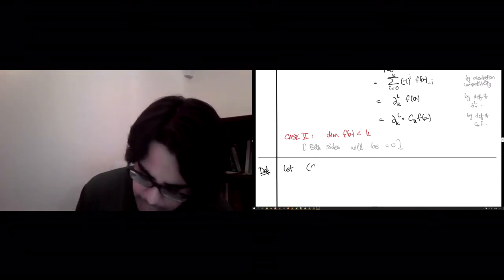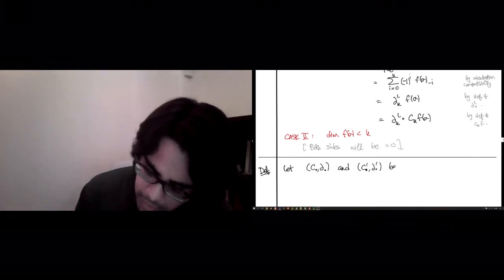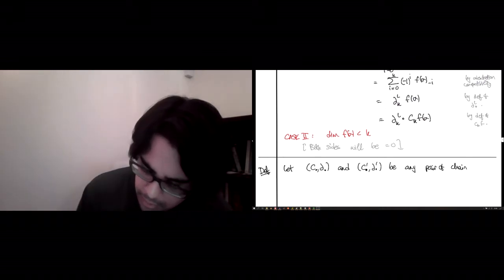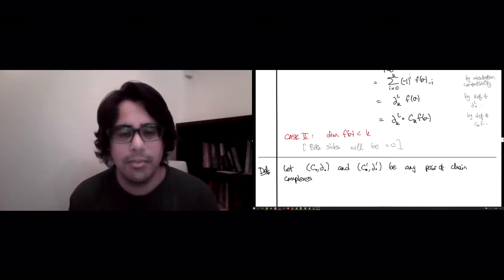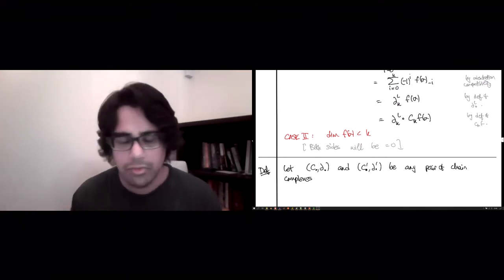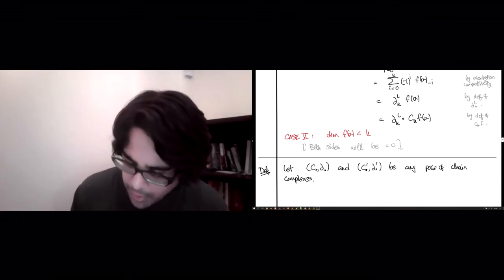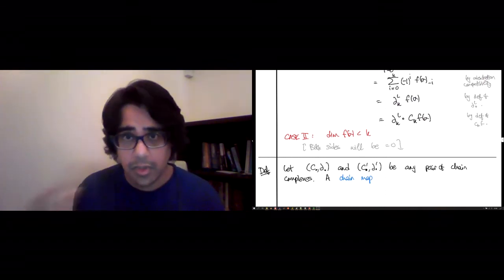So you let C and C' be any pair of chain complexes over some field F, which we're not writing down explicitly. And now the point is that these chain complexes need not have come from any simplicial complex the way, you know, there's no K or L.